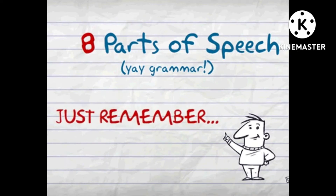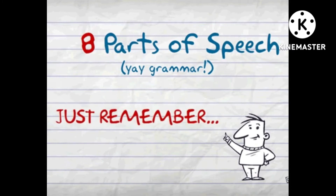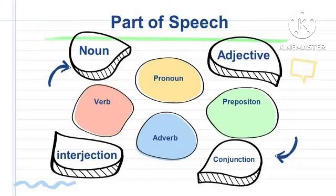Parts of speech. Students, there are total 8 parts of speech. Let's name them: the first is nouns, pronouns, verb, adverb, prepositions, conjunctions, adjectives, and interjections. These are the total 8 parts of speech. Let's know about them and discuss them in their own topics.